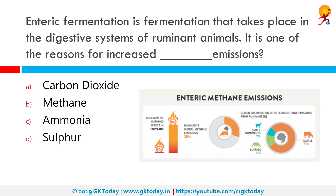Enteric fermentation is fermentation that takes place in the digestive system of ruminant animals, and it is one of the reasons for increased methane emissions. Ruminant animals like cows usually have more than one stomach. Enteric fermentation is the process by which carbohydrates are broken down by microorganisms in their digestive tract into simple molecules for absorption into the bloodstream. It is also one of the factors in increased methane emission.